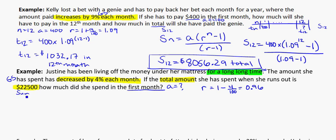And I'm going to assume here that my infinite sum is equal to 22500. Because they're telling me the total amount she has spent when she runs out, when she's used up all the money under the mattress, is $22,500. But it took her a long, long time to do it. So I'm going to assume it's an infinite sum.